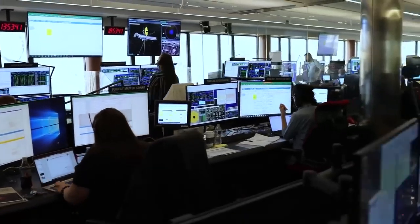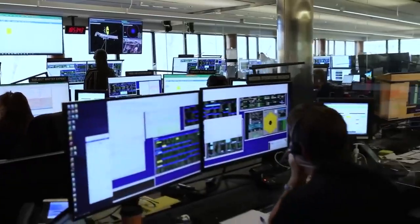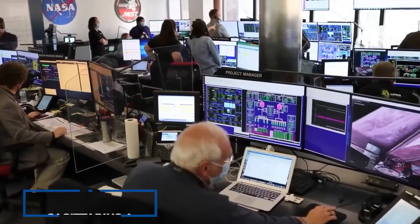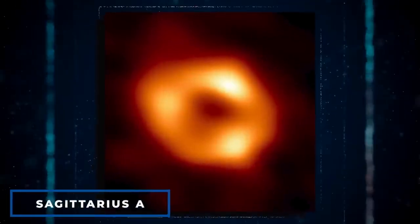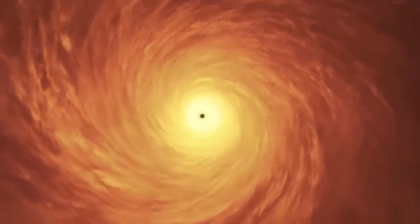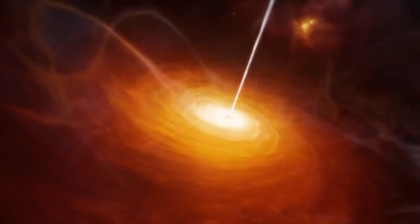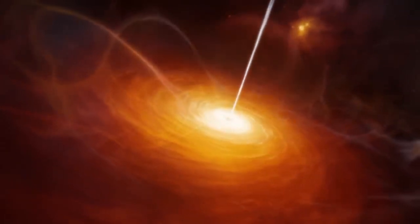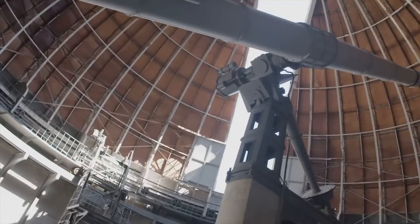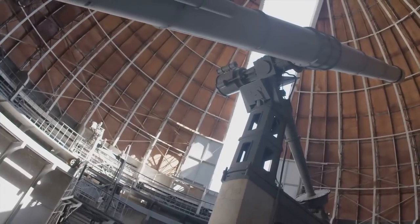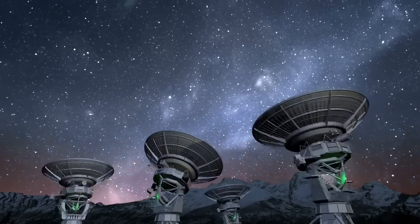An international team of academics and scientists set out to acquire the first image of a black hole, focusing on Sagittarius A, the supermassive black hole at the center of our Milky Way galaxy. The image of Sagittarius A was nearly challenging to acquire, necessitating the collaboration of several observatories and radio telescopes all around the world.